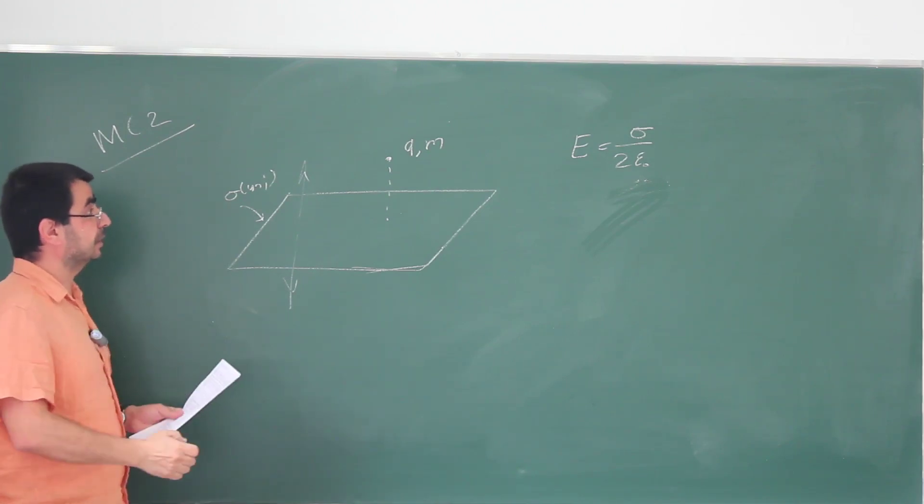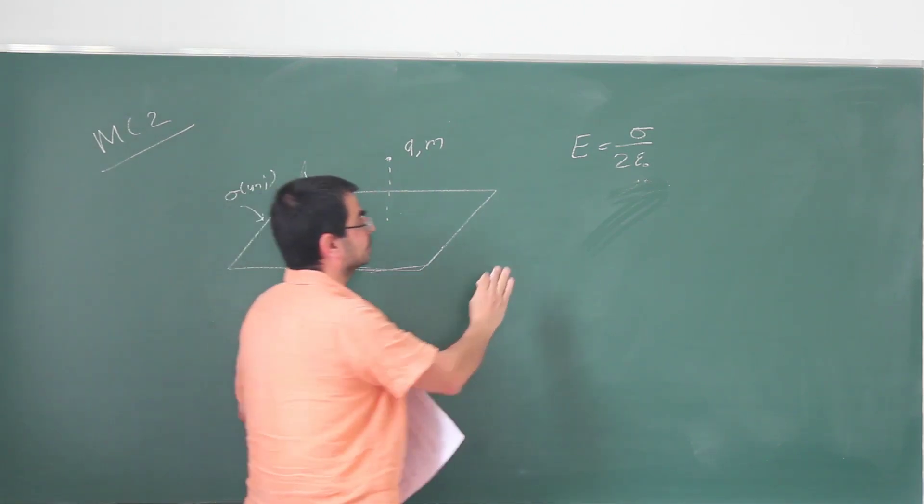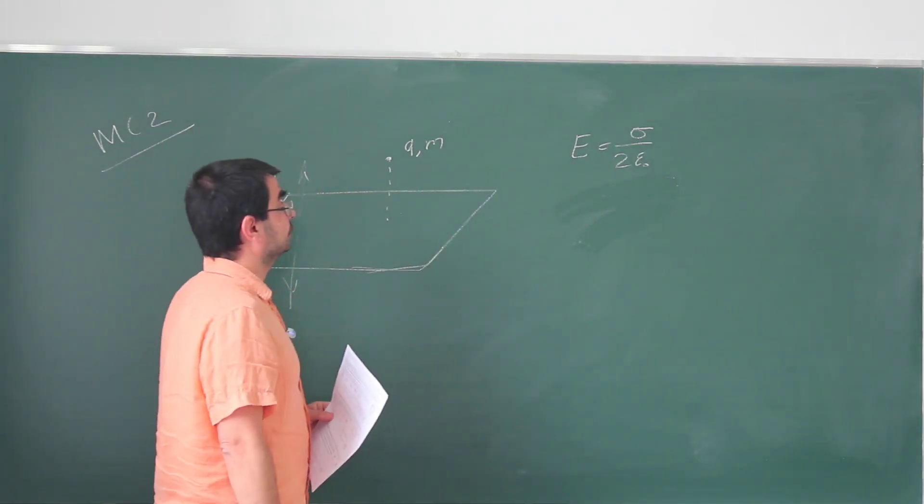This can be obtained by Gauss's law, and it's done as an example in the book. I'm not going to rederive this. This is the magnitude of the electric field.